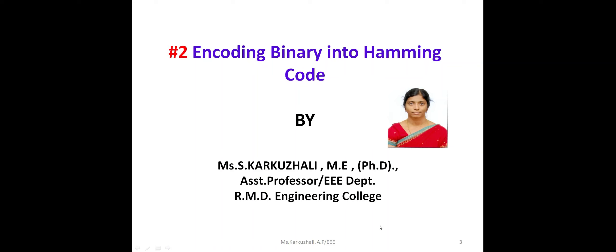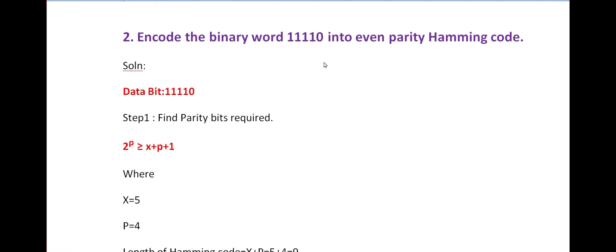Good morning students. Today we are going to discuss encoding binary into hamming code — the second problem. In the last video I solved one problem with a 7-bit hamming code. Now this is the 9-bit hamming code: encode the binary word 11110 into even parity hamming code.